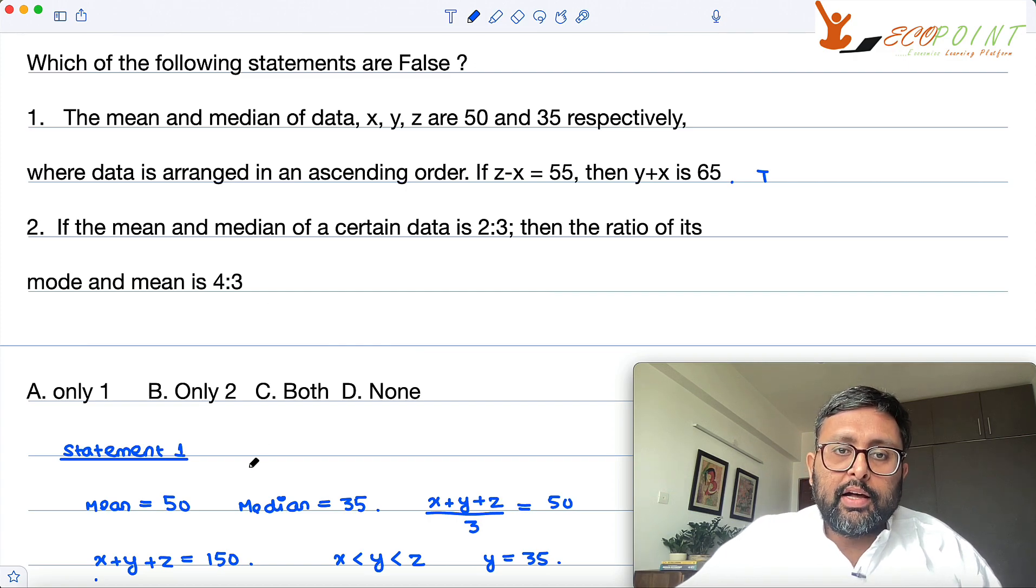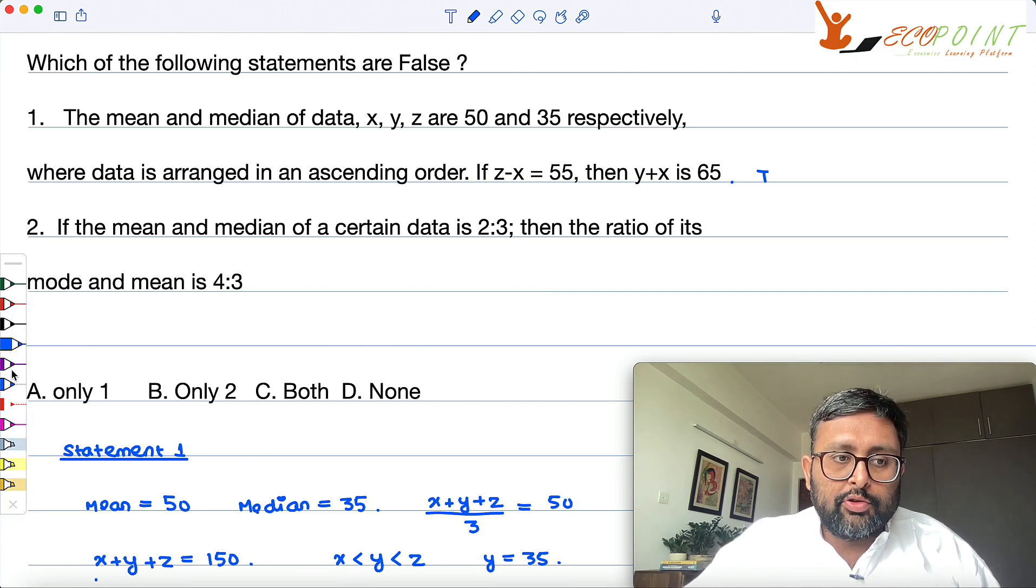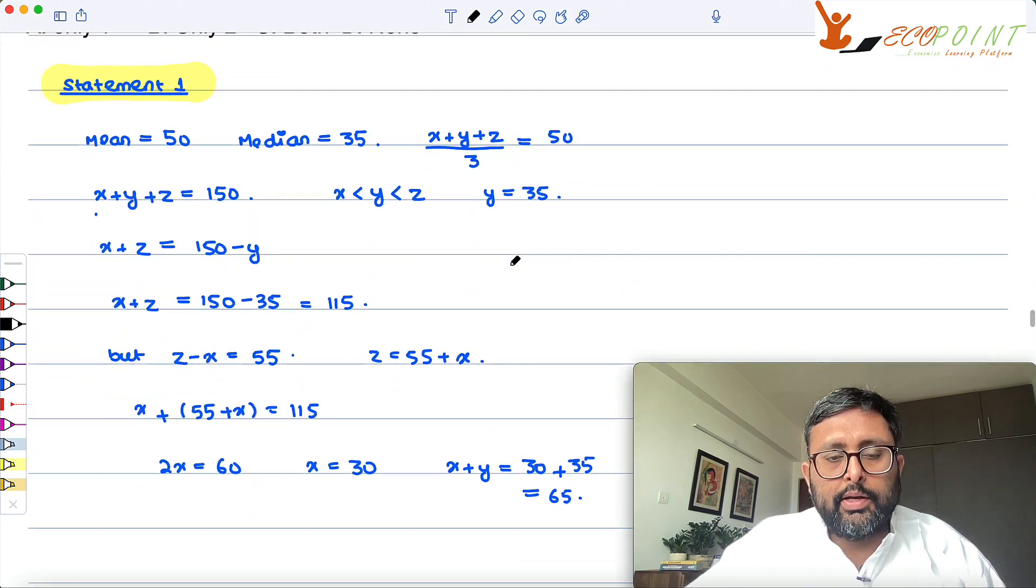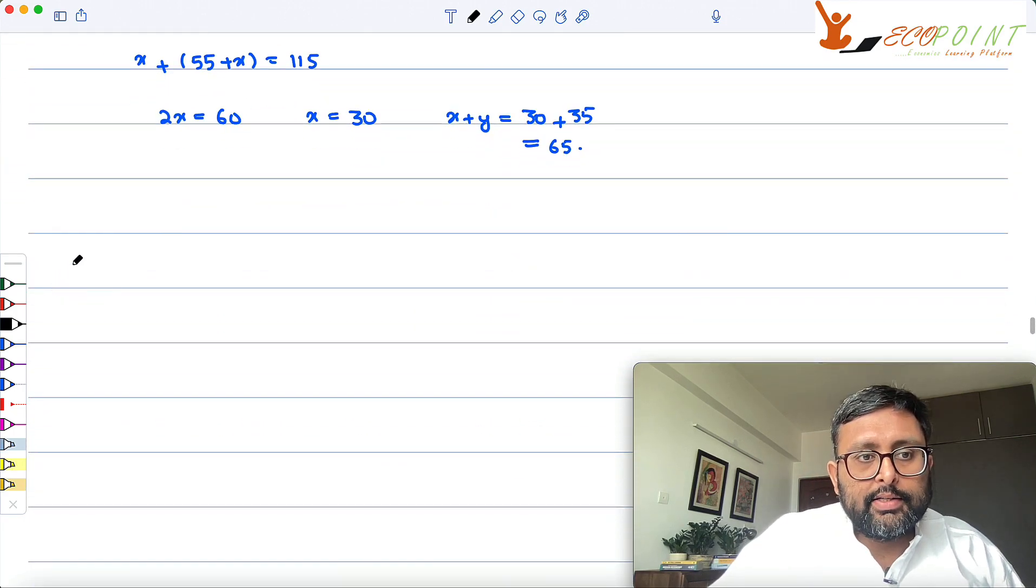Okay, if the mean and median of the data are 2 is to 3. So one, we have proved the first statement. Let me write about the second statement. If the mean and the median of a certain data is 2 is to 3, then the ratio of its mode to mean is 4 is to 3. Let us write that.